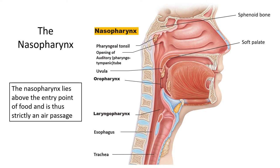Within the nasopharynx we have the pharyngeal tonsils, more commonly known as the adenoids, and also the opening to the auditory tube, more commonly known as the eustachian tube. This tube leads back to the middle ear and allows pressure in the middle ear to equalize with the pressure of the throat. If this tube becomes filled with fluid or mucus, you may not be able to equalize ear pressure, which can be painful. Yawning or swallowing stretches the throat and may help clear that blockage.